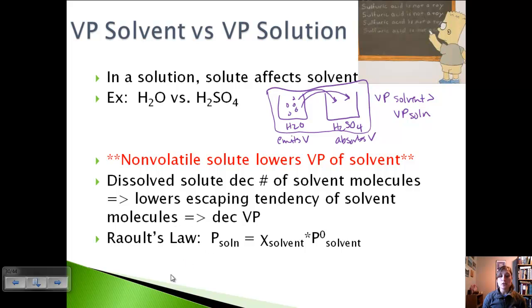And so we have the pressure observed of the solution is equal to the mole fraction of the solvent times the vapor pressure of the pure solvent. So that's why we have this zero right here, meaning pure solvent. And this is a linear relationship, and so we can, it's going to plot on the one.